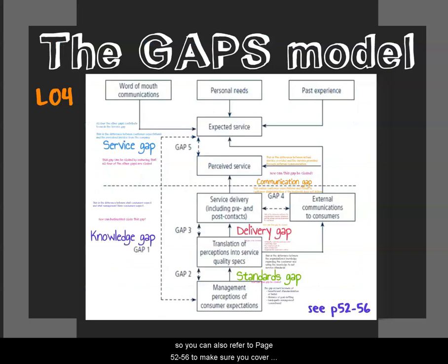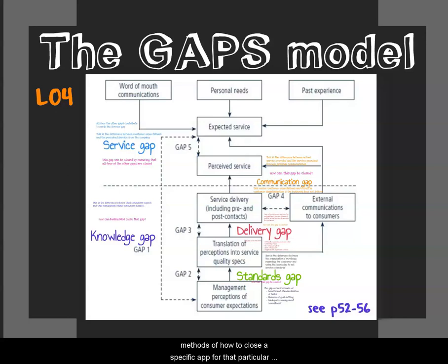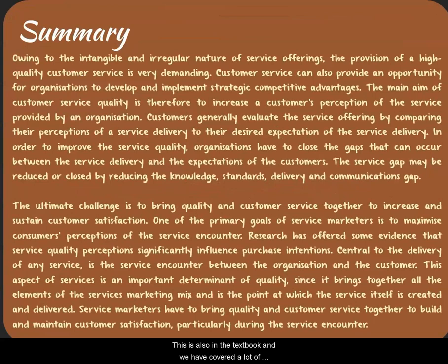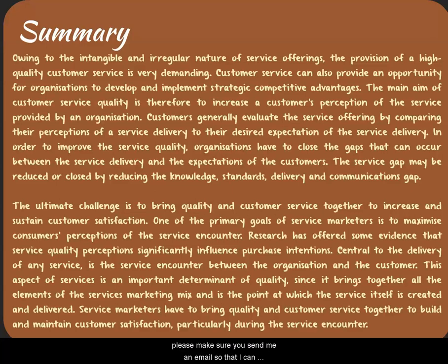Refer to pages 52 to 56 to cover the GAPS model in detail. Be able to identify the five gaps, describe them, and when reading a case study, identify the specific gaps and provide methods of how to close them. That was the end of Study Unit 2, Chapter 2. Make sure when you summarize the work, you summarize according to the learning outcomes and page numbers provided on the slides. If you are not sure about some content, send an email or attend the Zoom sessions so that I can provide further explanation.